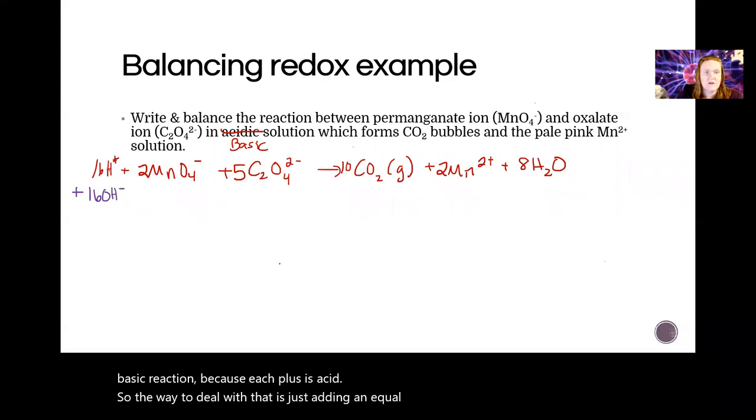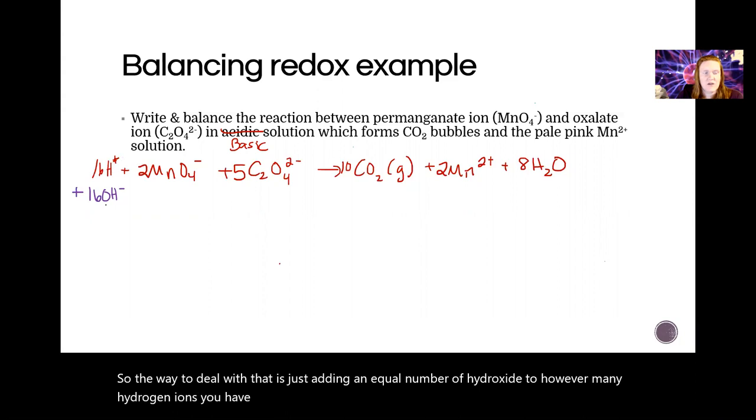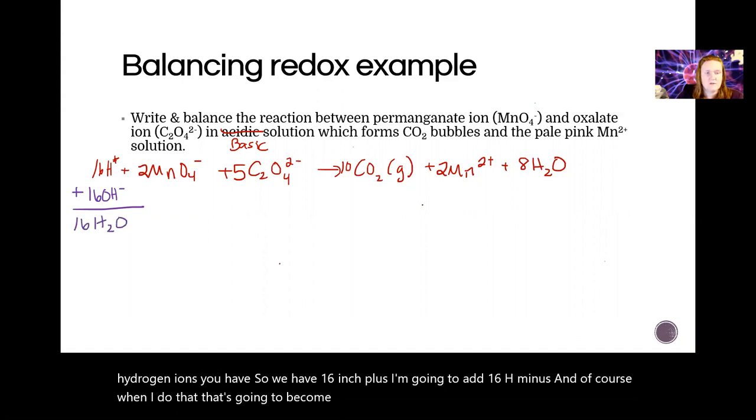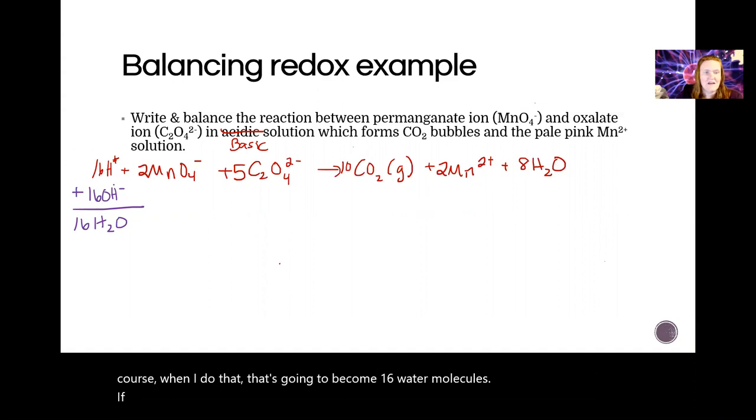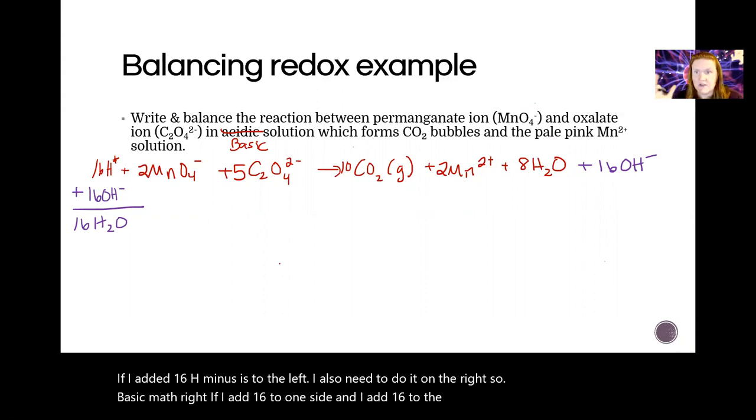The way to deal with that is just adding an equal number of hydroxide to however many hydrogen ions you have. So we have 16 H+, I'm going to add 16 OH- and of course when I do that, that's going to become 16 water molecules. If I added 16 OH- to the left, I also need to do it on the right. If I add 16 to one side and 16 to the other side, I haven't actually changed the problem at all.